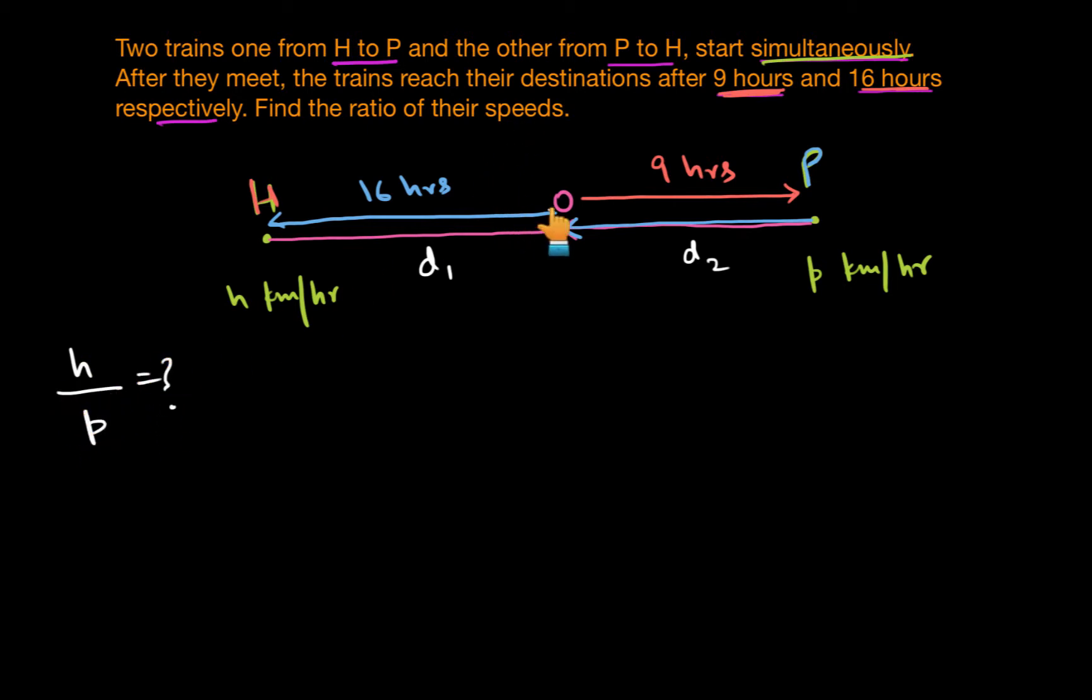Now let's see what all equations, what all things can we write mathematically from the situation given here. So first of all both the trains are meeting at point O.